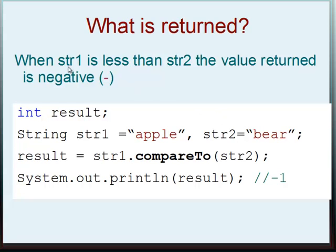What is returned? When string1 is less than string2, the value returned is negative. We have int result, string1 apple, string2 equals bear. Here we have result to store the int that's going to be returned. So we have string1.compareTo(string2), System.out.println result, we have negative one, meaning apple is less than bear. We'll have proper explanation of that later.